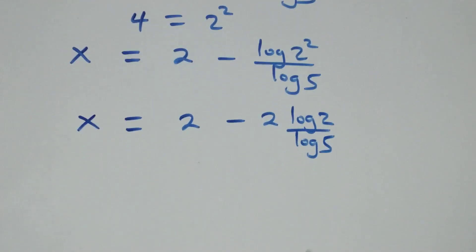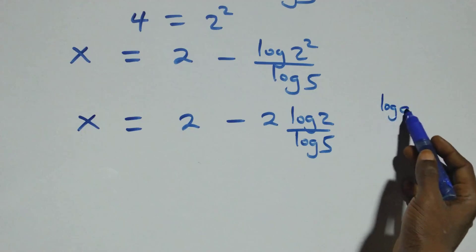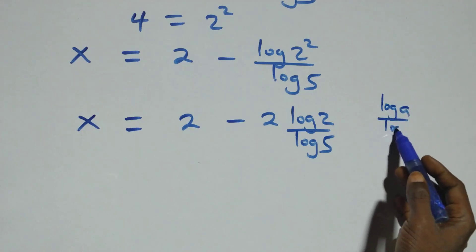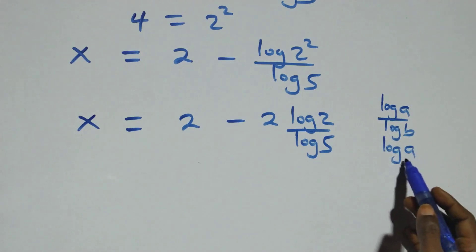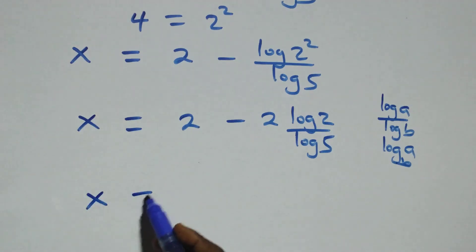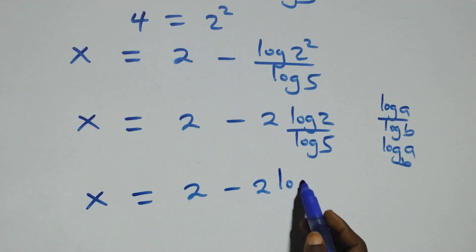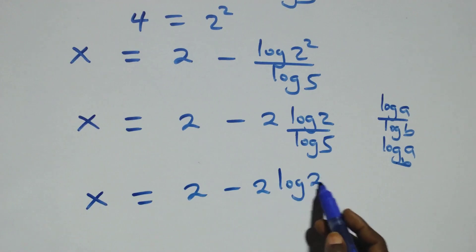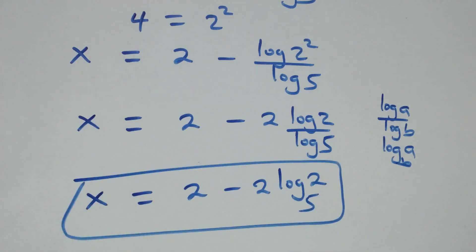We apply the change of base rule: log a over log b is the same thing as log a to base b. So what we have becomes x equals to 2 minus 2 log 2 base 5. That is the value of x.